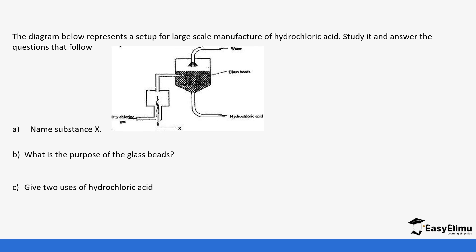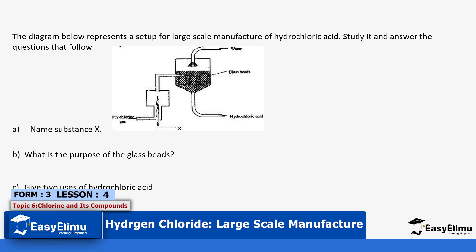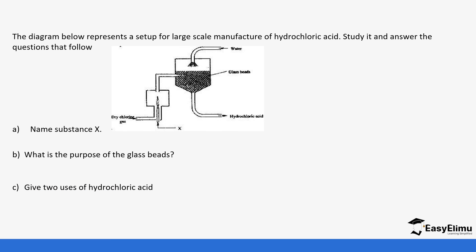Let's look at a practice question to close our study of chlorine and its compounds. The diagram shows a setup for the large-scale manufacture of hydrochloric acid. We know chlorine gas is present, so the other gas fed in is hydrogen. They are burnt to form hydrochloric fumes, which are then reacted with a stream of water in the presence of glass beads to produce the acid. The purpose of the glass beads is to increase surface area for absorption.